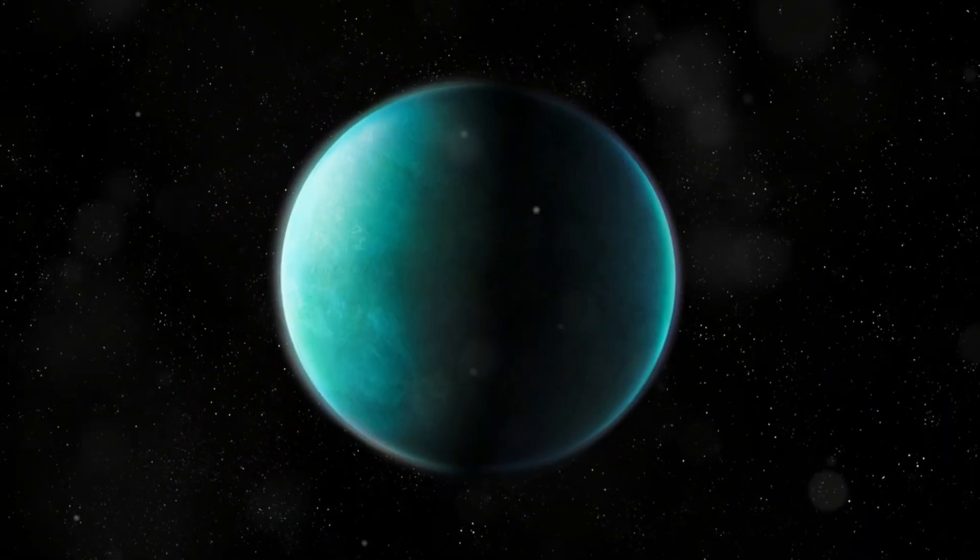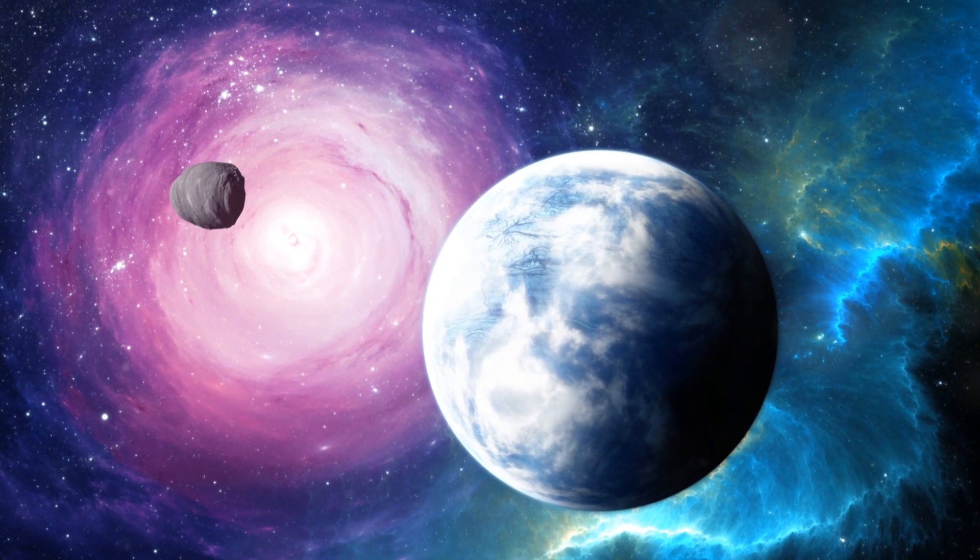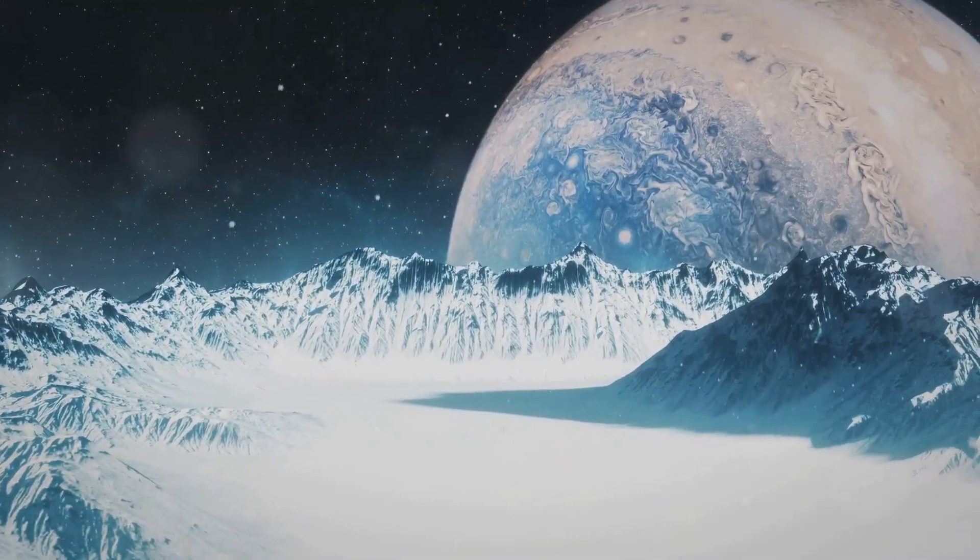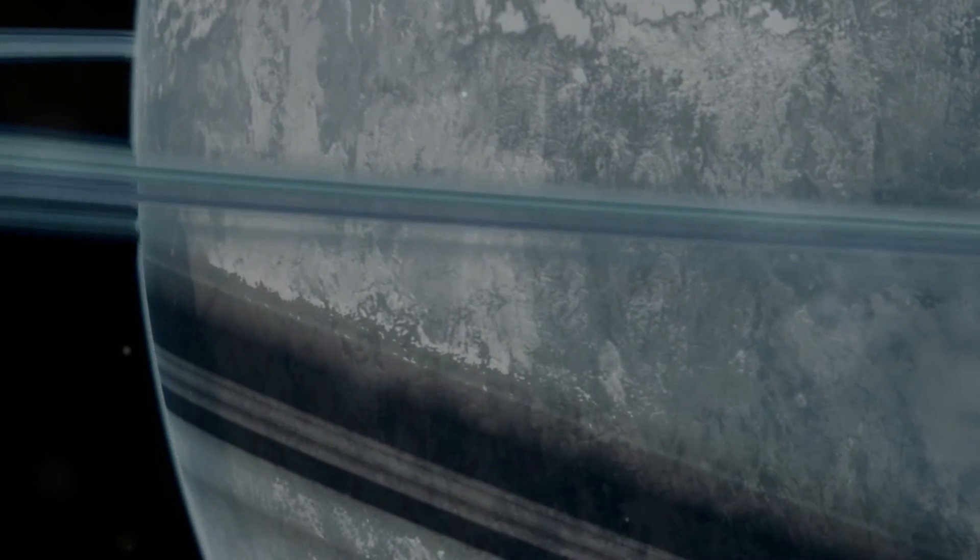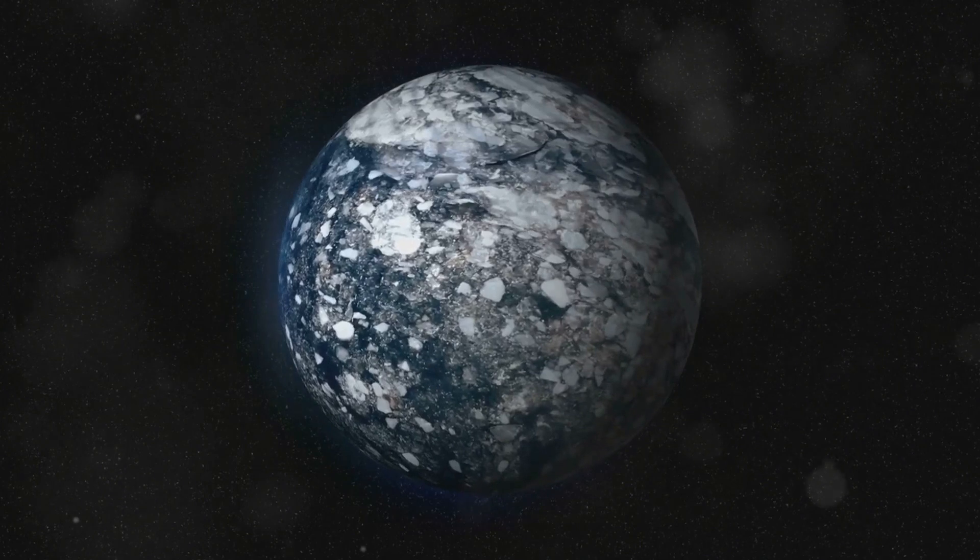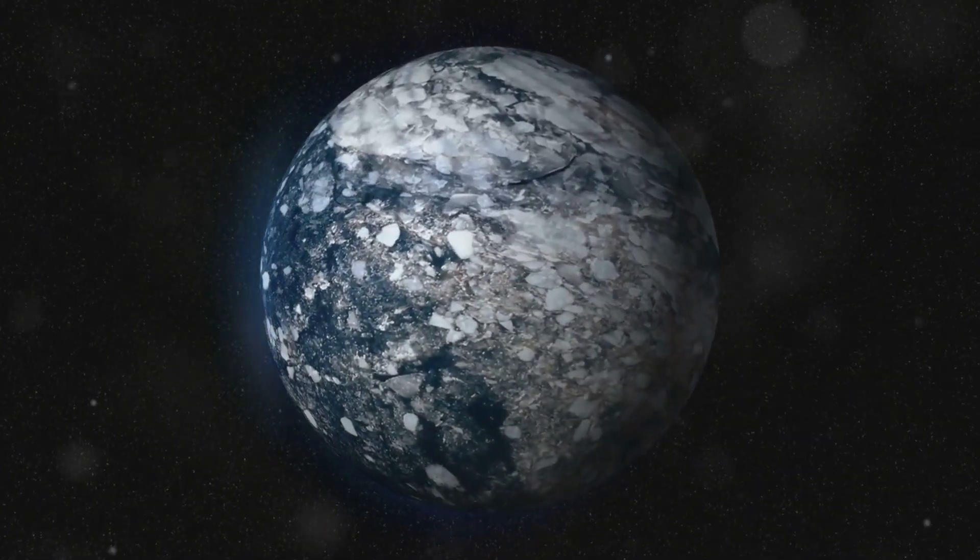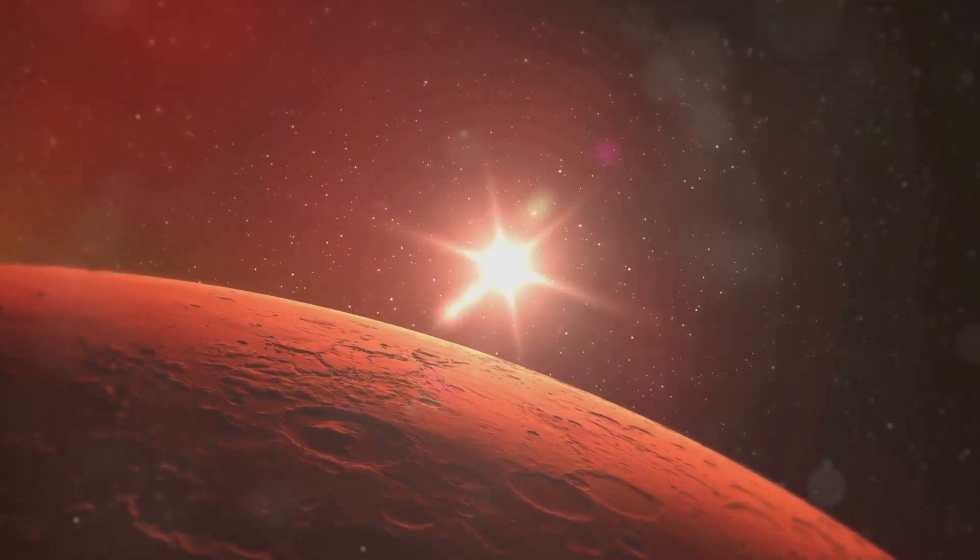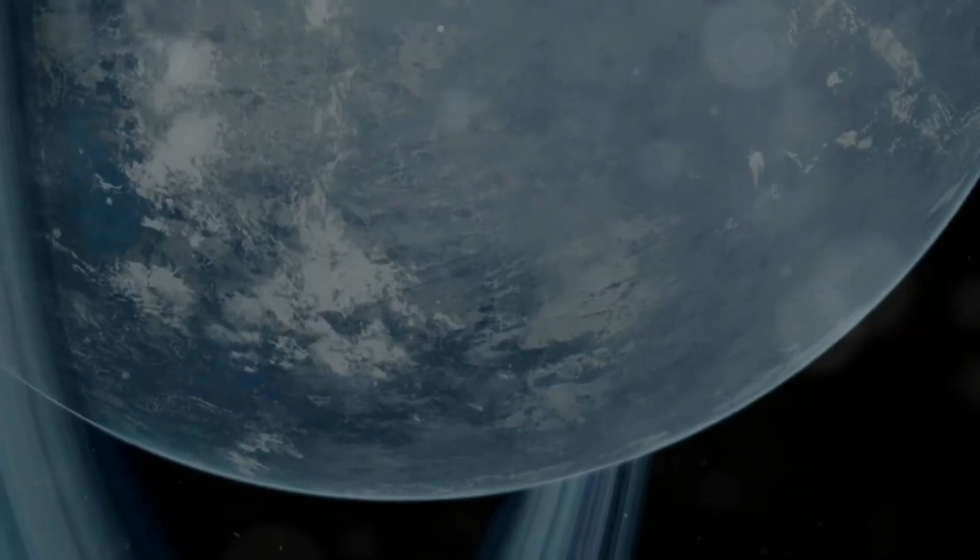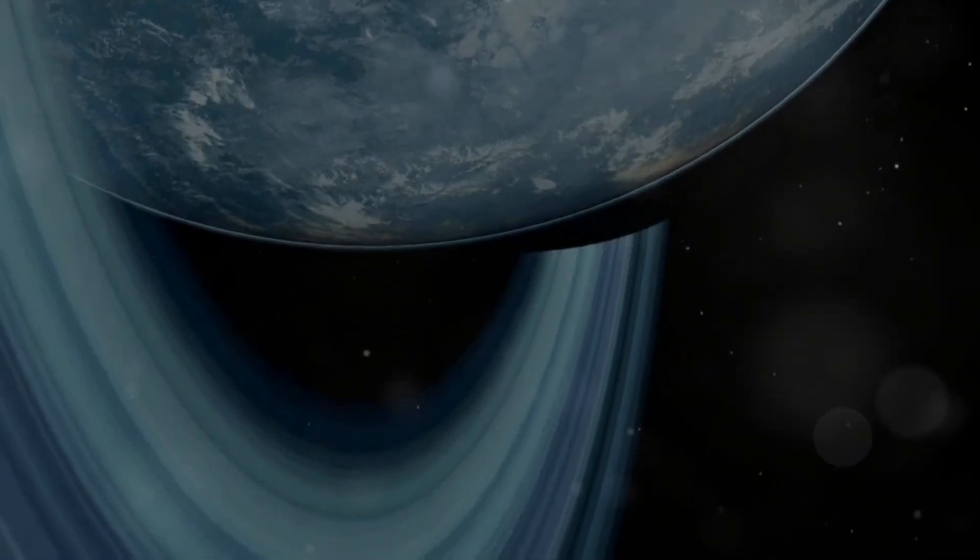Our final destination is Ogil 2005 BLG 390 LB, a super-Earth located 20,000 light-years away in the constellation Sagittarius. This planet is a frozen wasteland, a desolate world of ice and rock. Ogil 2005 BLG 390 LB is one of the coldest and most distant exoplanets ever discovered. With a surface temperature estimated to be minus 364 degrees Fahrenheit, it's colder than Pluto. Imagine a world where the sun is nothing more than a distant pinprick of light, where the air is thin and the ground is covered in a thick layer of ice. This is Ogil 2005 BLG 390 LB, a planet locked in an eternal winter.